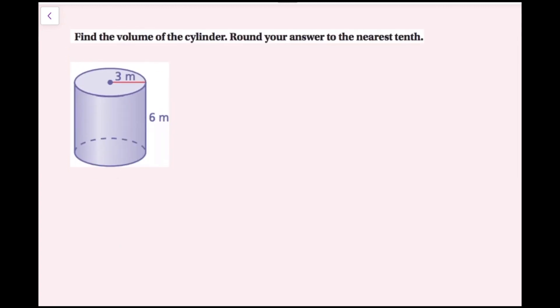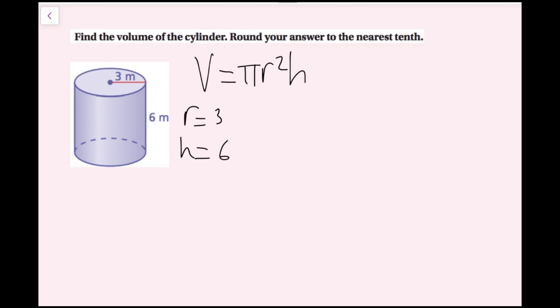In this example, we're going to find the volume of the cylinder and round our answer to the nearest tenth. First, I'm going to write down my formula, which is V equals pi R squared H, where R is the radius of the circle and H is the height of the cylinder. I can see my radius is three meters and my height is six meters, so R equals three and H equals six.